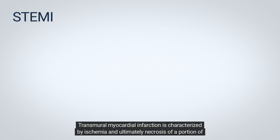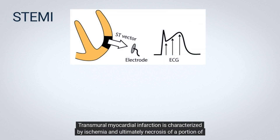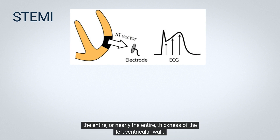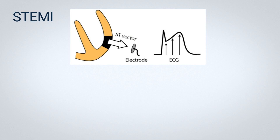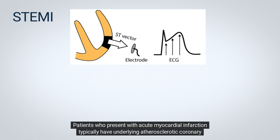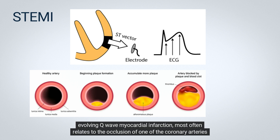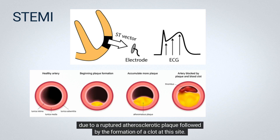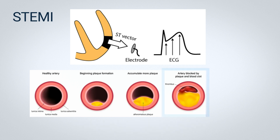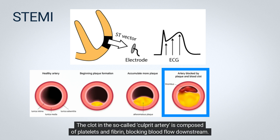Transmural myocardial infarction is characterized by ischemia and ultimately necrosis of a portion of the entire, or nearly the entire, thickness of the left ventricular wall. Patients who present with acute myocardial infarction typically have underlying atherosclerotic coronary artery disease. The pathophysiology of acute ST-segment elevation myocardial infarction, or STEMI, and the subsequent evolving Q-wave myocardial infarction most often relates to the occlusion of one of the coronary arteries due to a ruptured atherosclerotic plaque followed by the formation of a clot at this site. The clot in the so-called culprit artery is composed of platelets and fibrin, blocking blood flow downstream.